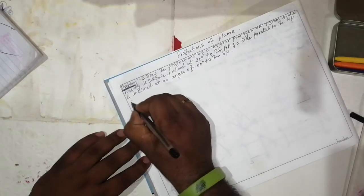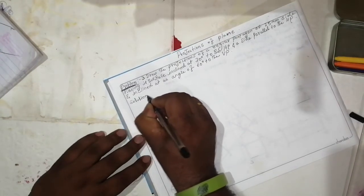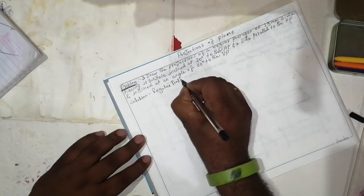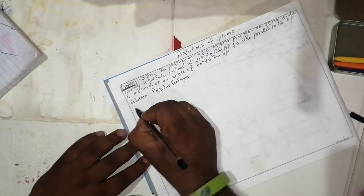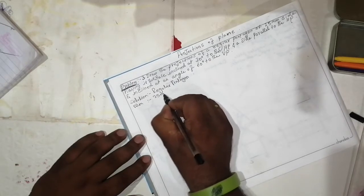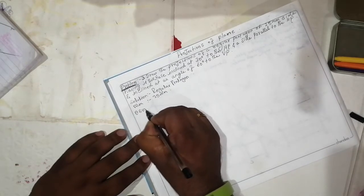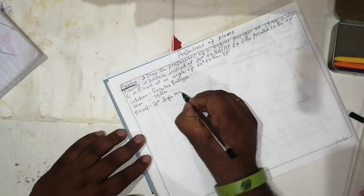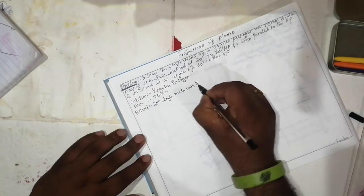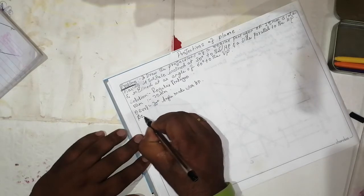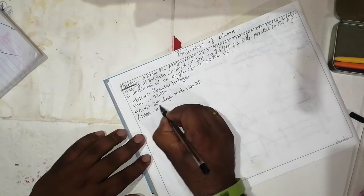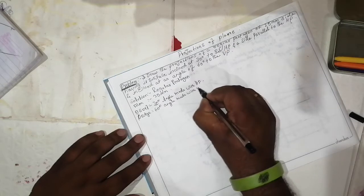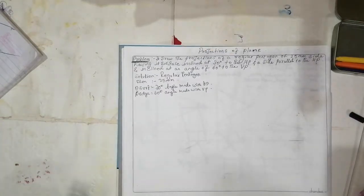The solution: regular pentagon with dimension 25mm. Theta surface is 30 degrees — the angle made with HP. Theta edge is 60 degrees — the angle made with VP.